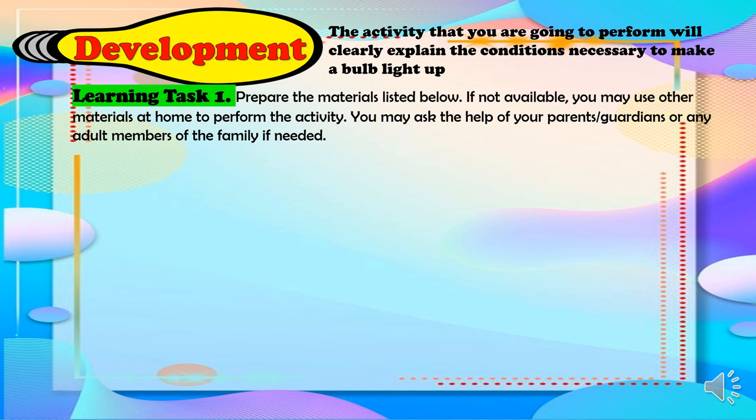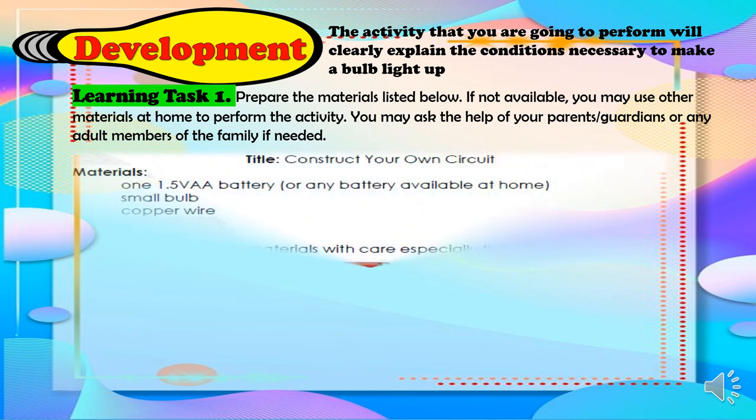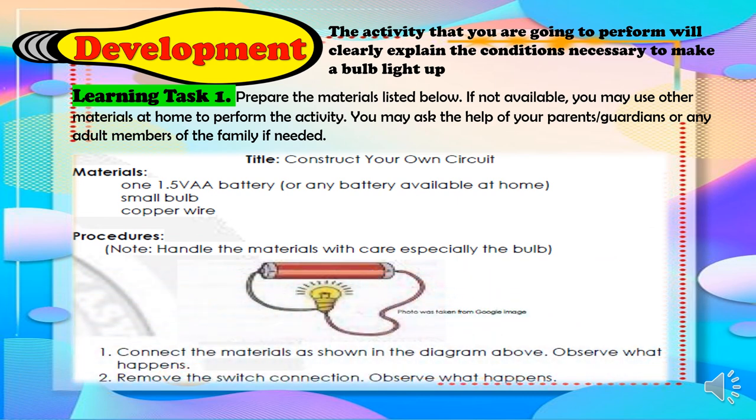You may ask the help of your parents, guardians, or any adult members of the family if needed. The title of the activity is, construct your own circuit. The materials: one 1.5V AA battery or any adult battery available at home, small bulb and copper wire.